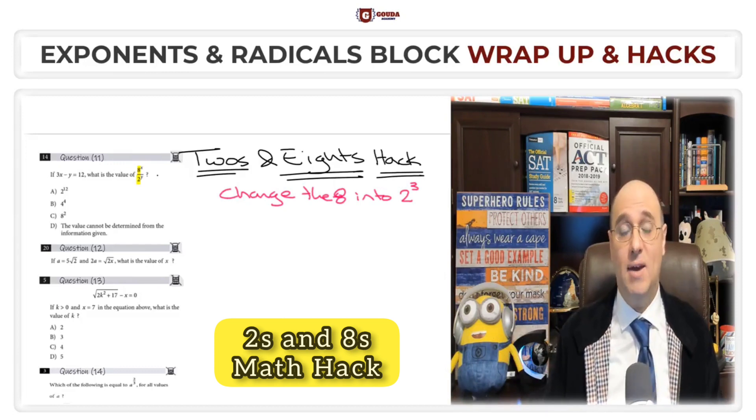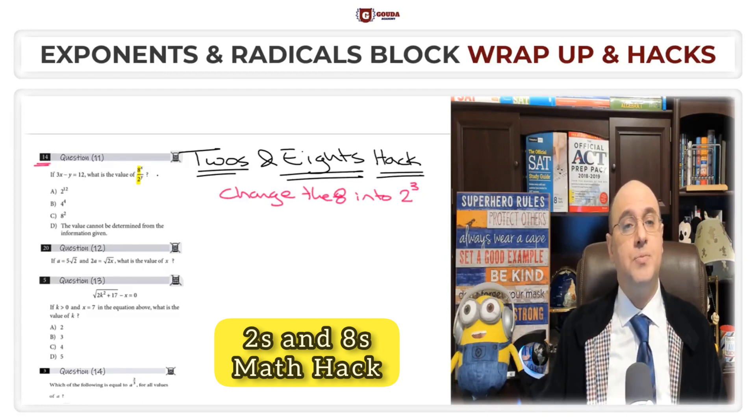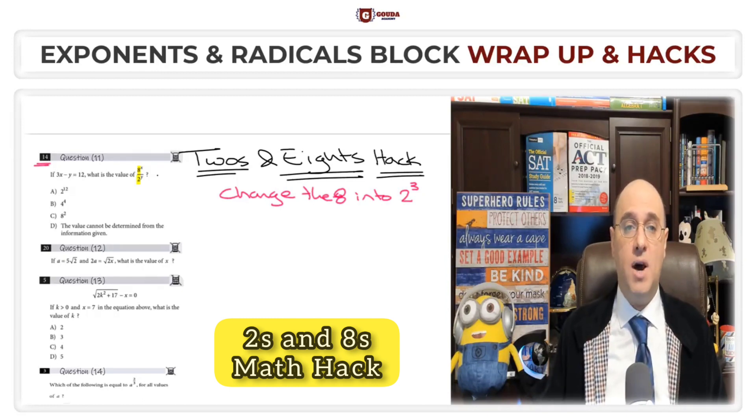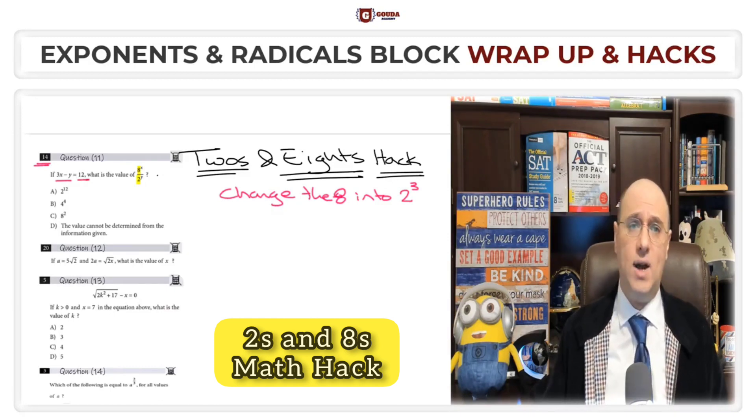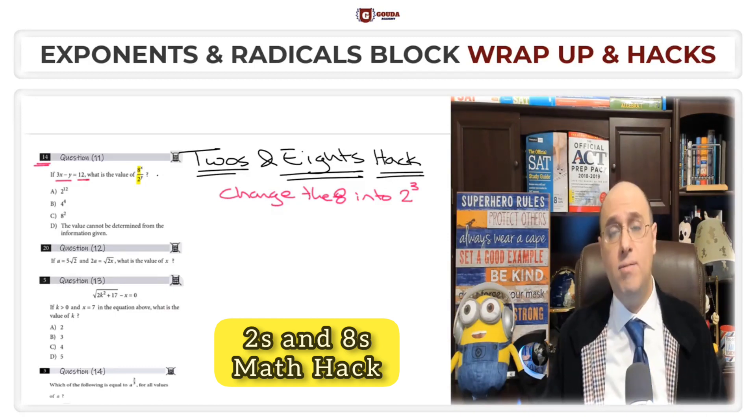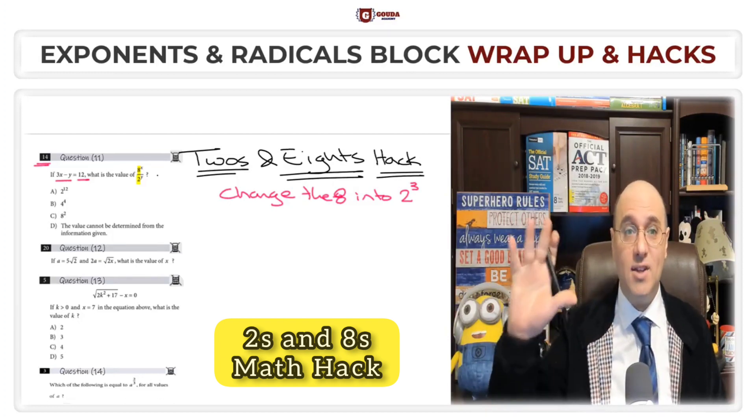This is usually the key that lets you solve quickly. So let's take an example here in question number 14. It says if 3x minus y equals 12, many people start saying okay, I'll isolate the x by itself. So I'll do 3x equals 12 minus y and divide everything by 3. Wrong. You've started incorrectly.